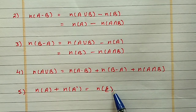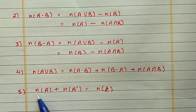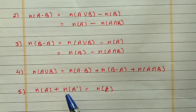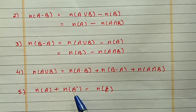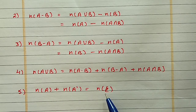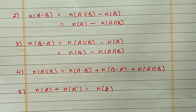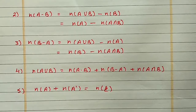The fifth property is for the universal set: N(A) + N(A') = N(U). The elements of A and the elements of A complement — meaning elements from the universal set which are not in A — together give us the universal set. Now we will start exercise 6 from question number 9.